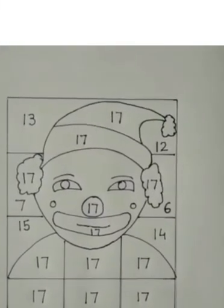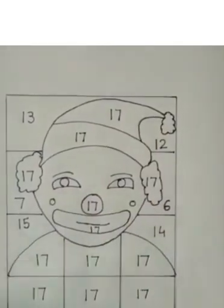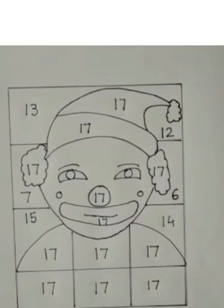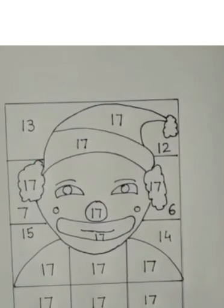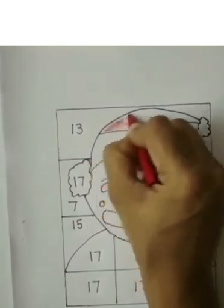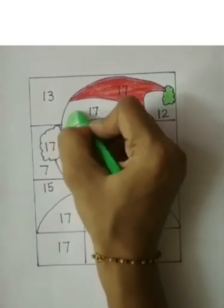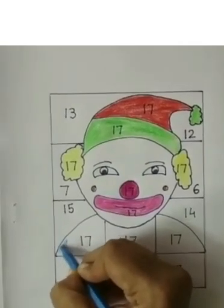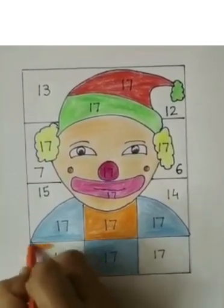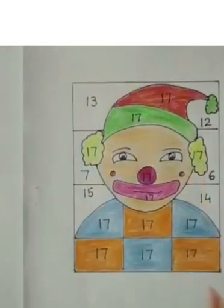Children, see this picture. This is a joker. Can you see so many numbers inside it? We will color the part which has number 17. Wherever number 17 is written, we have to color there. Shall we start? We will start from here. Now the next 17 number is here. You have to color nicely. Now here is 17 number. Like this. Now see. Colorful joker is ready.